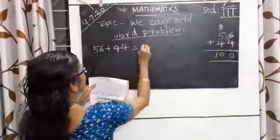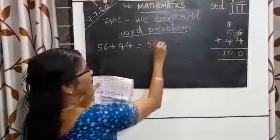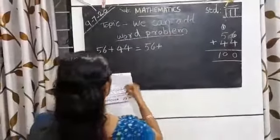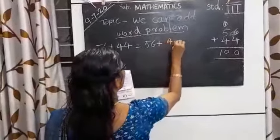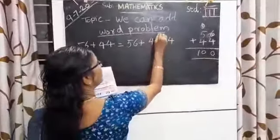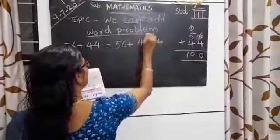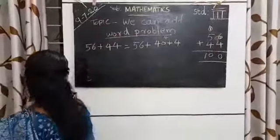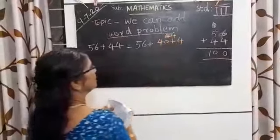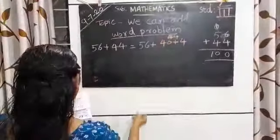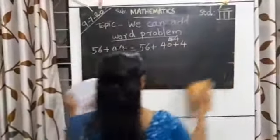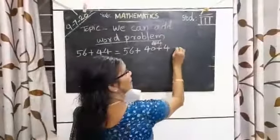We can change this order by writing 56 plus 40 plus 4. Since 40 plus 4 equals 44, this equals 100.